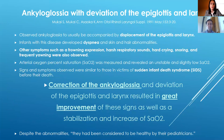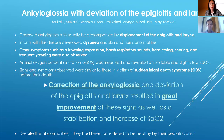Another study covers ankyloglossia with deviation of the epiglottis and larynx. It observes that ankyloglossia is usually accompanied by displacement of the epiglottis and the larynx. Infants with this condition developed dyspnea and skin and hair abnormalities. Other symptoms such as a frowning expression, harsh respiratory sounds, hard crying, snoring, and frequent yawning were observed. Arterial oxygen saturation measurements revealed an unstable and slightly low saturated oxygen level.